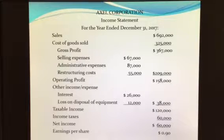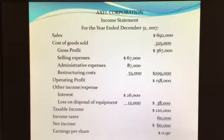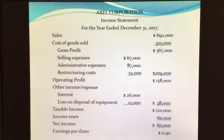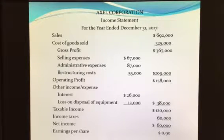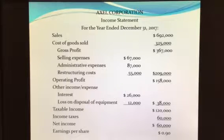General and administrative expenses include broader costs of operating the company, such as the president's salary, accounting salaries, property taxes on the office building, and depreciation on office equipment. In this particular case, the company also has restructuring costs deducted here — we'll discuss what those represent later. We then have a second measure of profit: operating profit.